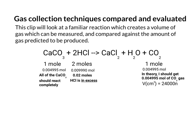So that means I should get 0.004995 moles of CO2 gas. So if we use V equals 24,000 N we can then work out how many centimeters cubed of carbon dioxide we're expecting to get. So that should mean we're expecting 119.88 centimeters cubed of carbon dioxide gas. So let's now do this reaction using two separate techniques to see if we can work out which one is more effective.